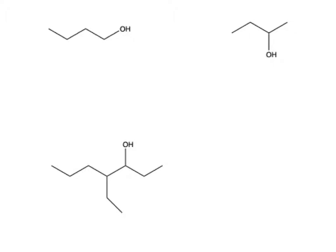Let's look at a few examples. In our first example, our main carbon chain is four carbons long. And so we are going to have the root butan-. Our alcohol is attached to our first carbon, and so we get butan-1-ol.